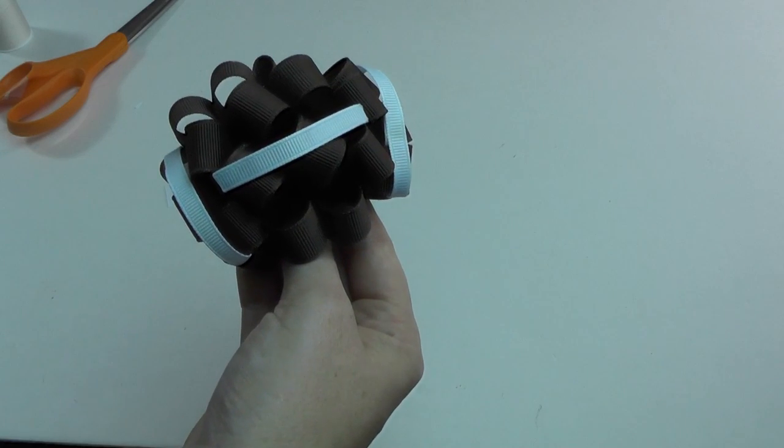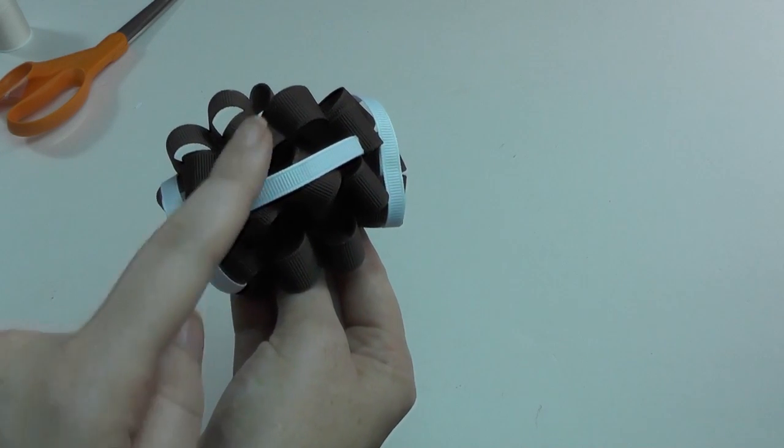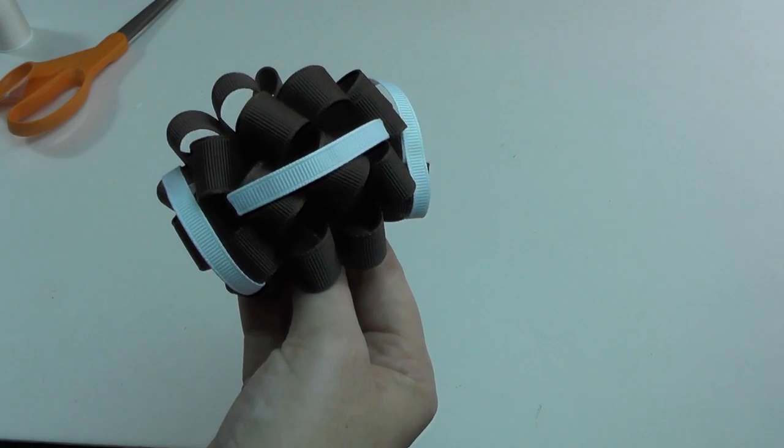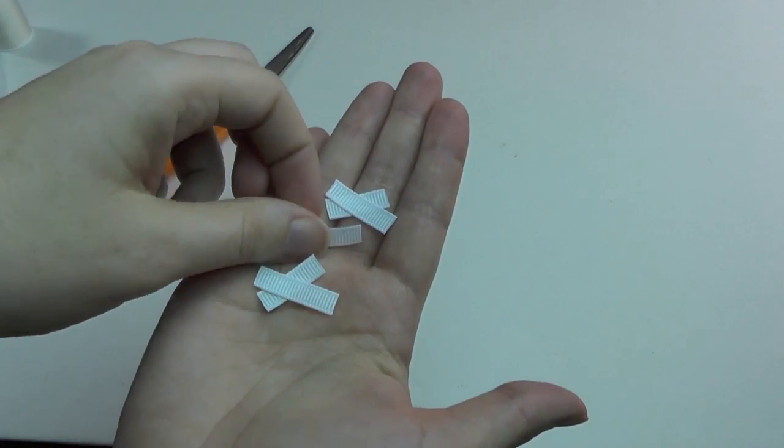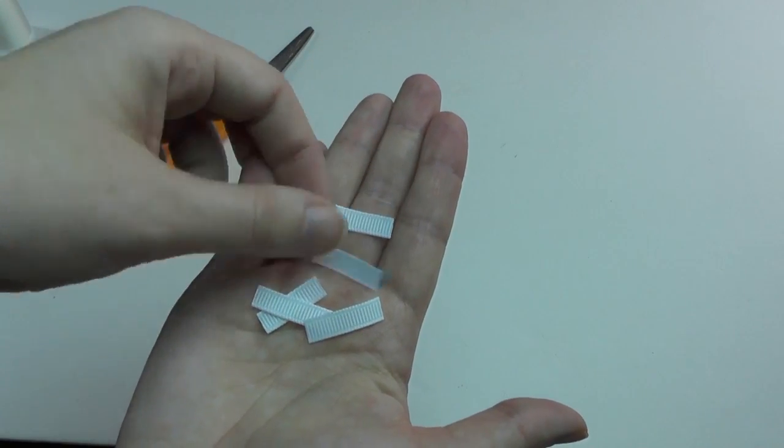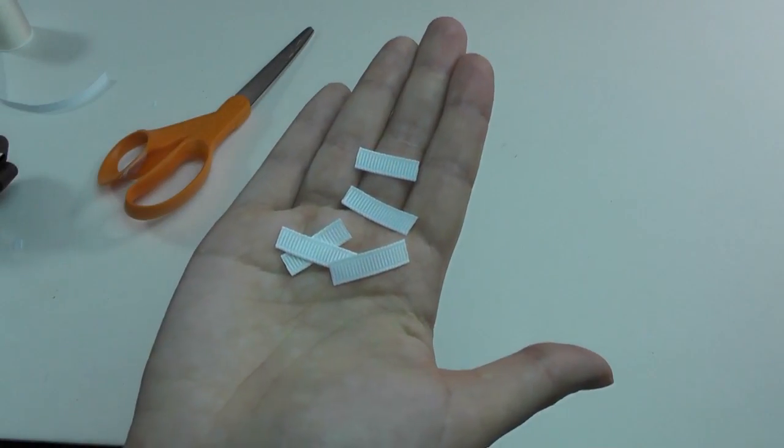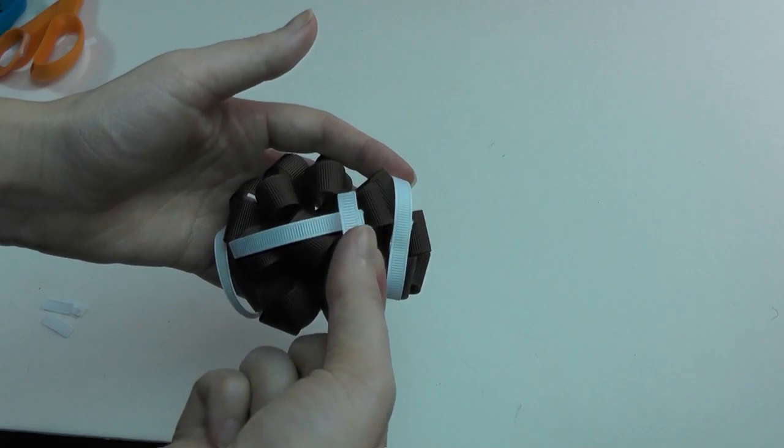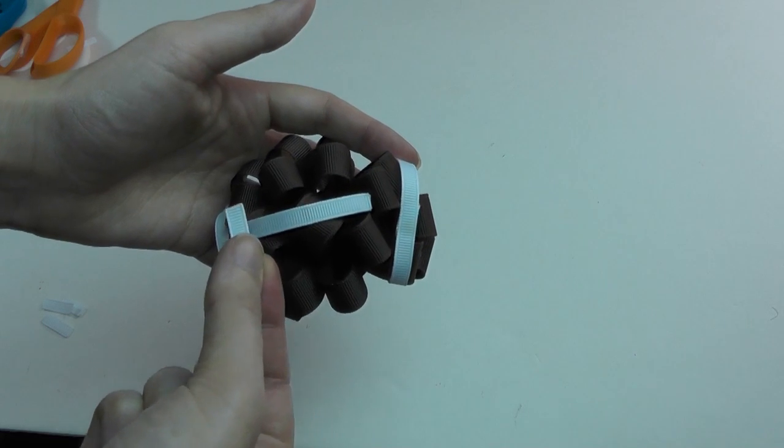Moving right along, now we are going to add the small stitching that goes across the middle. And for that part, I just cut a few strips and I am going to heat seal each end. And now we are just going to add them to that middle strip all the way across.